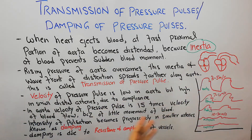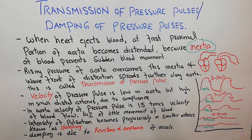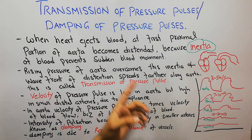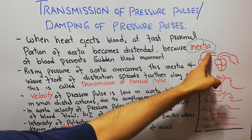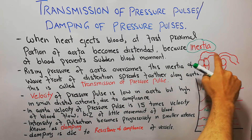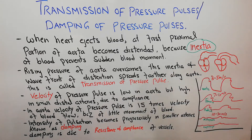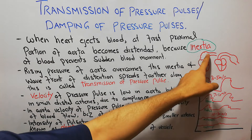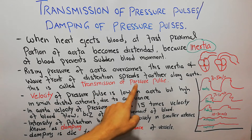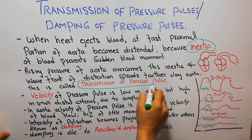As pressure increases further and overcomes the inertia of the blood, the distension gradually spreads along the aorta from the proximal portion toward the distal blood vessels. This movement of distension from one segment to the next is what is known as transmission of the pressure pulse.